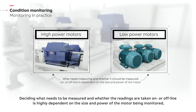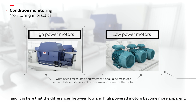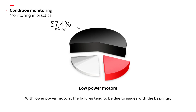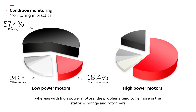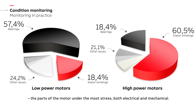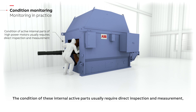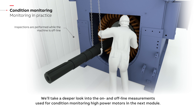It is here that the differences between low and high powered motors become more apparent. With lower power motors, the failures tend to be due to issues with the bearings, whereas with high power motors the problems tend to lie more in the stator windings and rotor bars — the parts of the motor under the most stress, both electrical and mechanical. The condition of these internal active parts usually requires direct inspection and measurement, so inspections are performed offline in addition to the online measurements taken while the machine is running.